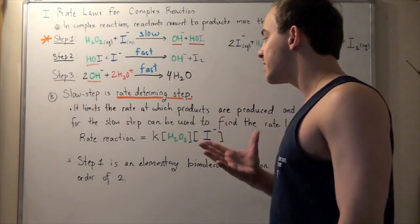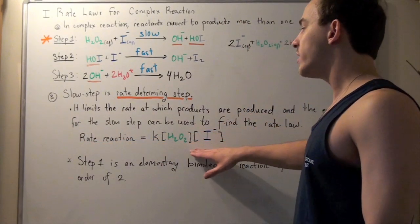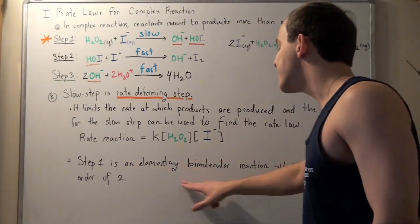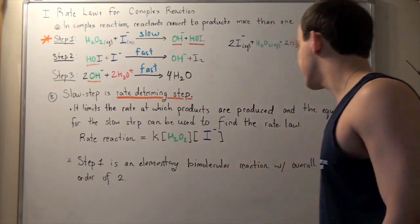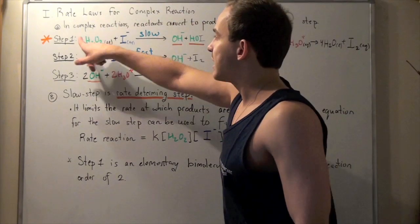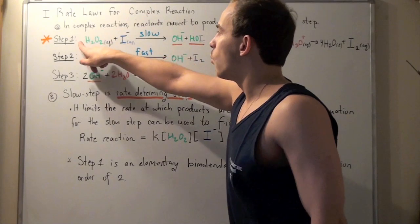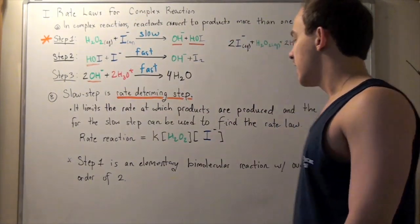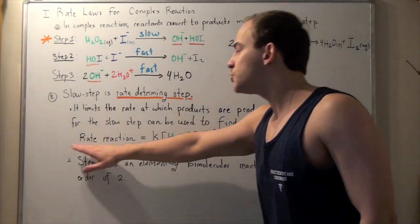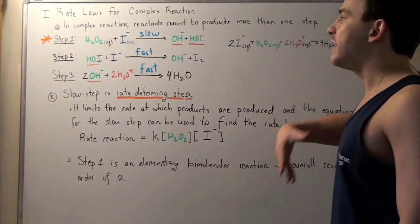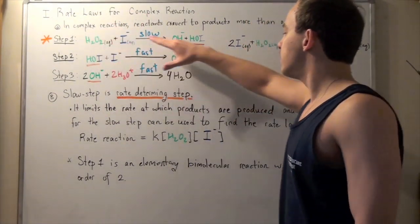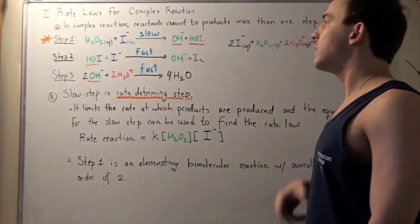So, once again, the reason we're allowed to find the rate law so quickly and without experimental results is because step one is an elementary bimolecular reaction with an overall reaction order of two. In other words, this has one coefficient and a second coefficient. So, one plus one, two. And that's why. Now, once again, once you find this guy, you have to check to make sure this is in fact the rate law by finding the rate law using experimental results for this bimolecular elementary reaction.